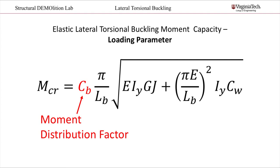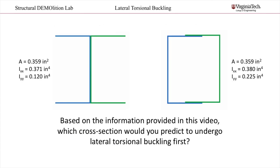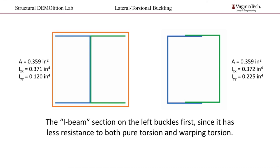This factor depends on how the moment is distributed along the beam, also known as the moment gradient. A constant moment along the beam results in a factor of 1. Now that we have explained the causes of lateral torsional buckling, can you answer the original question? Which section do you think will buckle first? The I-beam section on the left buckles first, since it is less resistant to both pure torsion and warping torsion. This is due to a much lower torsional constant J and warping torsion CW term.